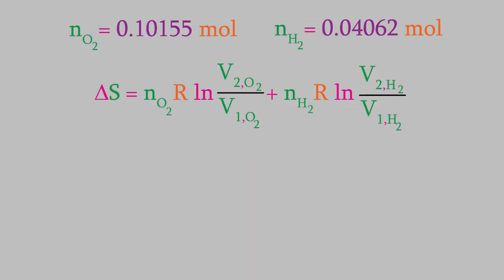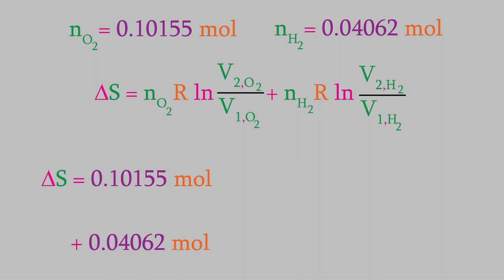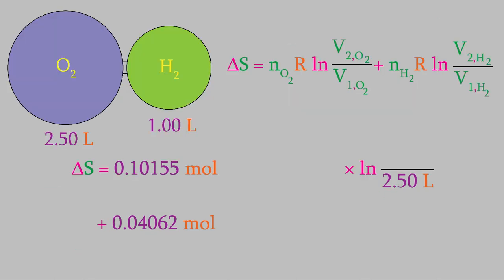Now that we know that, we can use this equation to find the entropy. We plug in the results we just obtained for the moles. We need to be a little careful about the volumes, because the initial volume for each gas is different. For the oxygen, V1 is 2.50 liters, and for hydrogen, V1 is 1.00 liters. When we open the valve, each gas is able to flow into both flasks, so the oxygen can occupy the total volume of the two flasks, which is 3.50 liters. That's also true for the hydrogen, so V2 is 3.50 liters for both gases.